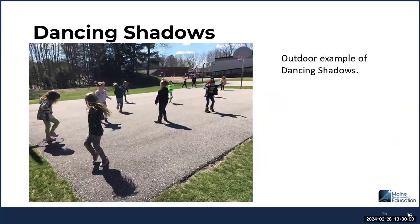The Dancing Shadows activity can be taken outside, as shown in the picture, but also takes place in the classroom using different light sources during centers. Connections are made to Moon Bear's Shadow and Kitten's First Full Moon. Children compare shadow movements to shadow puppets and illustrations from the stories, move like different animals from unit books and other familiar books, and write and dictate stories about their shadows.